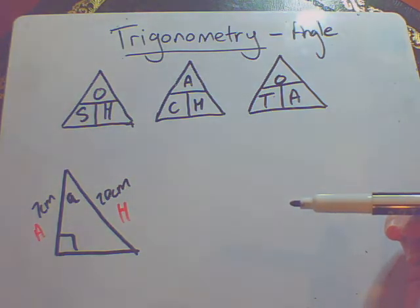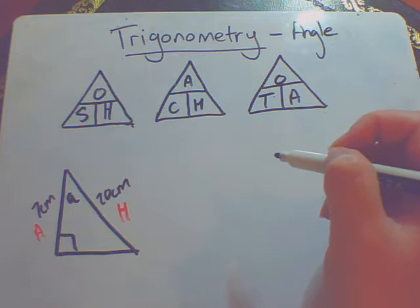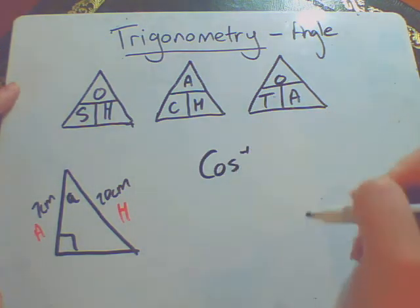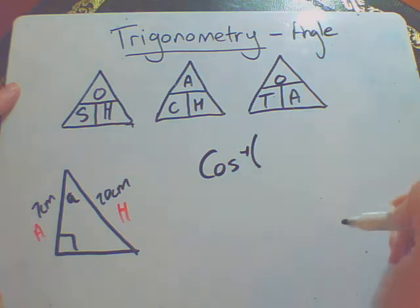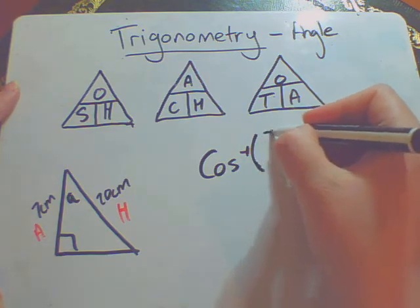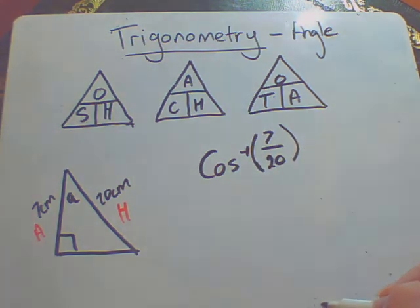Now on its own, that isn't going to work. So what I'm going to have to do is if you press shift and then your cos button, it should come up and say cos minus 1. Inside those brackets, that is where you put your A divided by H, your adjacent divided by hypotenuse.